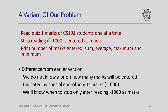Now consider a variant of the problem. Previously the number of students was provided as input. Now suppose we cannot provide that, so instead we read marks one at a time, and if at any point minus 1000 is provided as a mark, we stop reading and print the count of marks entered, average, minimum, and maximum. The key difference: we do not know a priori how many marks will be entered. The end of input is indicated by the sentinel value minus 1000, and we only know to stop after reading it.